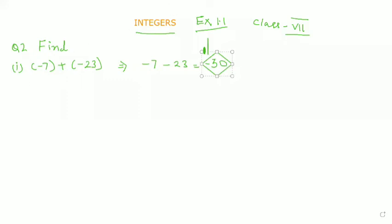Now come to the second part. The second part is (-32) + 47. So minus 32 plus 47 would become 15.